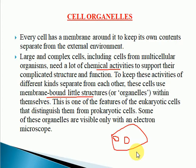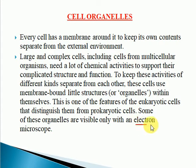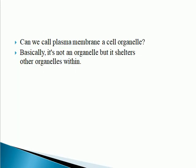In prokaryotic cells, the membrane is not present around the organelles, and some cell organelles might even be absent. These cell organelles are visible only under the electron microscope. Now, can we call the plasma membrane a cell organelle? Basically, it is not an organelle, but it shelters all the other cell organelles within it.